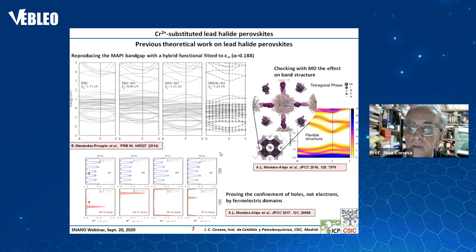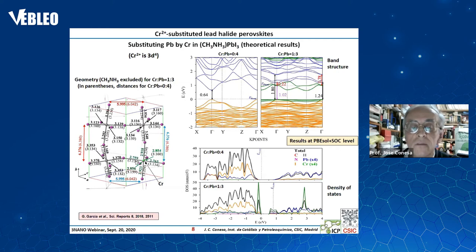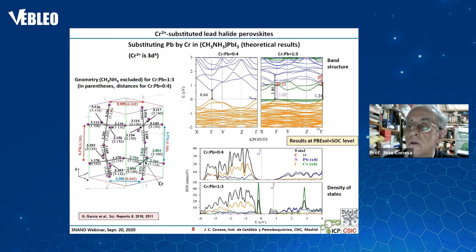Now, going to the chromium substitution, we have been studying the substitution of lead by chromium in this perovskite. On one hand we have been able to verify the geometry: in the case of chromium we have a shortening of the bond lengths around chromium, because chromium is much less bulky than lead, while around the lead atoms the distance from the iodine atoms increases because the iodine atoms are being pulled toward the chromium.